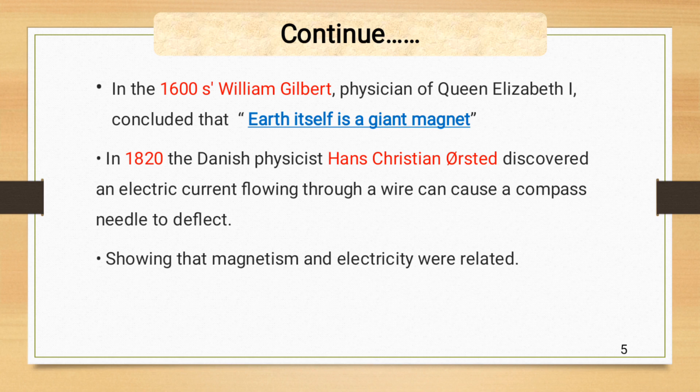In 1820, Hans Christian Oersted discovered an electric current flowing through a wire can cause a compass needle to deflect as the moving charges create a magnetic field around itself that can deflect the compass needle placed in its path, showing that magnetism and electricity are related to each other.